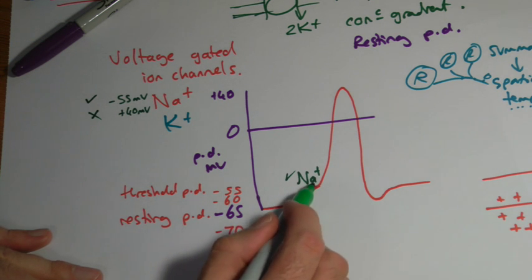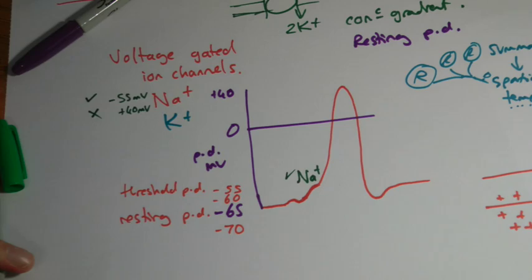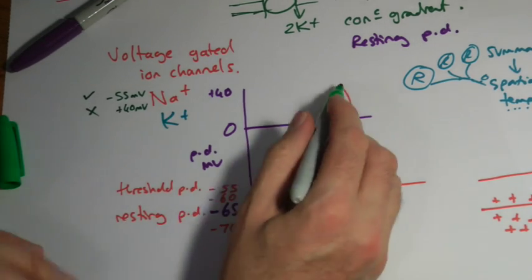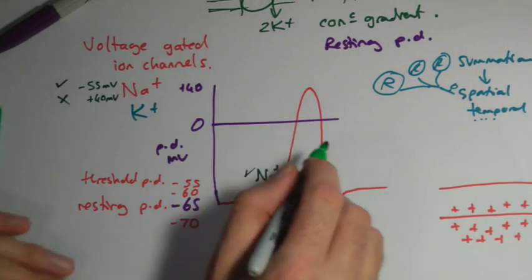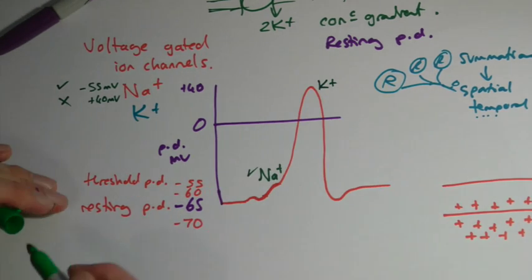So the sodium channels open down here. Voltage-gated sodium channels open at about minus fifty-five. About plus forty it stops, because they shut. However, at that point, the potassium voltage-gated channels open.